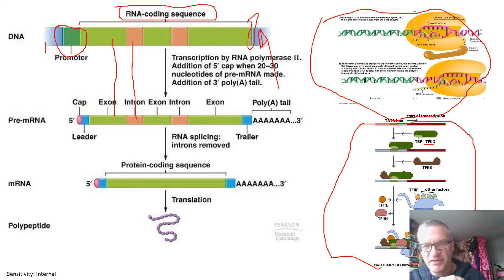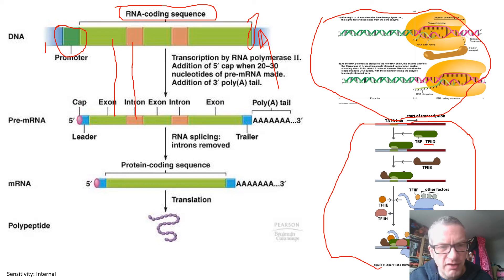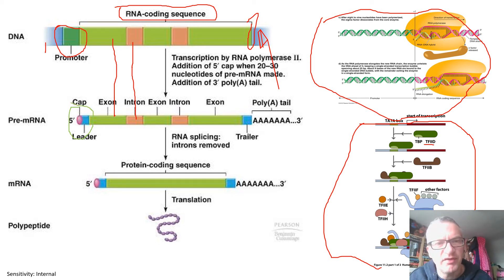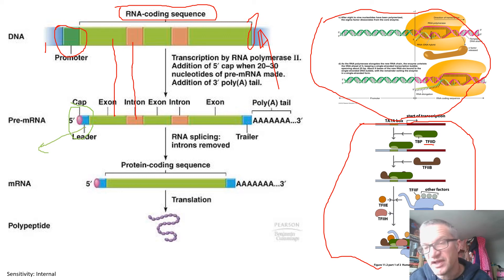In eukaryotes only, we have some additional factors. The five prime untranslated region contains a cap which provides protection against five prime exonuclease activity, and as we'll see later on, it is very important in the translation process because it contains something called the Shine-Dalgarno sequence.